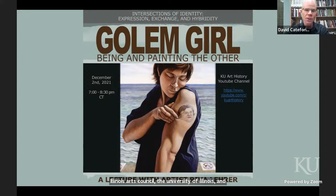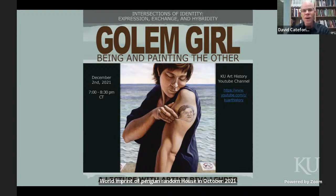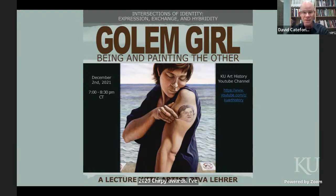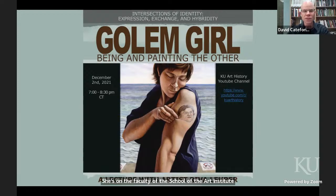Riva Lehrer's memoir, Golem Girl, was published by the One World imprint of Penguin Random House in October 2020. It won the 2020 Barbellion Prize for Literature, was a finalist for the National Book Critics Circle Award, and shortlisted for the Chicago Review of Books 2020 Chirby Awards. I've read it, and you should too — it's amazing. Riva Lehrer is represented by Regal Hoffman and Associates Literary Agency in New York City, and by Zola Lieberman Gallery in Chicago. She's on the faculty of the School of the Art Institute of Chicago and an instructor in the Medical Humanities Departments of Northwestern University.